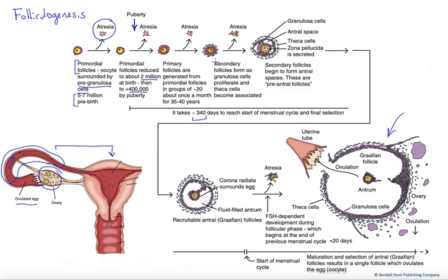A given cohort is being stimulated to go from a primary to a secondary follicle. The granulosa cells divide and we form multiple layers. We're actually going to pull in cells from the ovarian cortex that are going to become associated with this follicle — these are the theca cells. They're going to work with the granulosa cells to help support that developing egg, the oocyte.